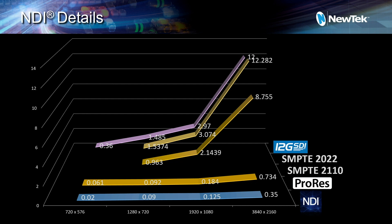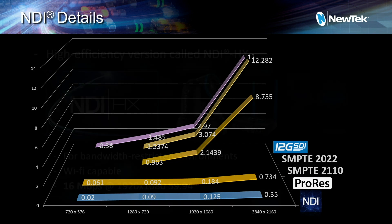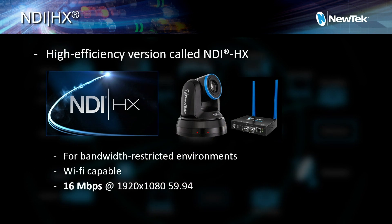Down at the bottom is effectively what we do in NDI. A 4K stream of NDI goes from what would be 12G all the way down to 350 megabits. So that is the efficiency we're looking for. We are doing a lot of amazing things, but we're retaining that visual quality — it's still production ready.